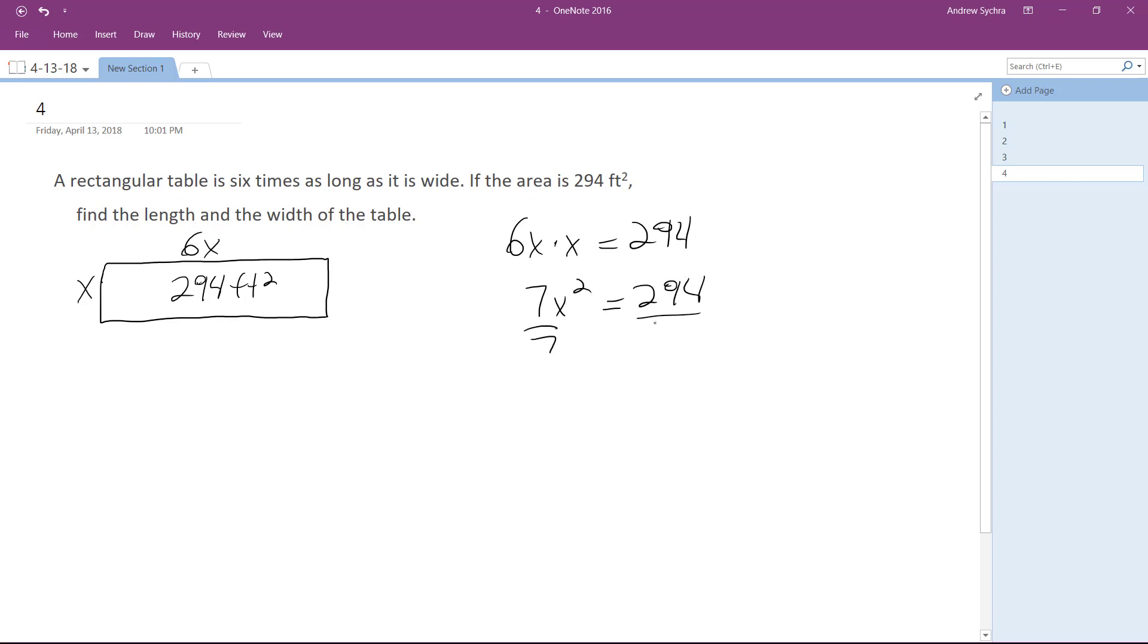Divide by 7, divide by 7. I don't know if that goes in there wholly. It does, alright. So we get x squared is equal to 42, and I made a mistake. I don't know why I made this as 7, should be a 6.